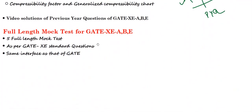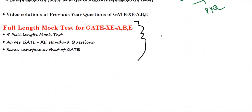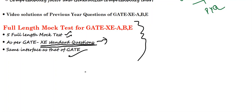Finally, the next course is about mock tests. We are going to offer five full-length mock tests, and those five mock tests will have XC standard questions. Questions will be as per XC standard, which means the questions will be tough compared to ME, but the question level will be very good as per XC standard. The interface will be the same as GATE, and you will have a scientific calculator — all the essentials will be there. Out of these five mock tests, four can be written at any time.